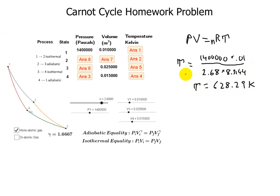Now while I'm at it, I might as well get answer two because it's isothermal as we go from one to two. Temperature is not going to change. So if that's temperature of one, then temperature of two is going to be 628.29 Kelvin also.